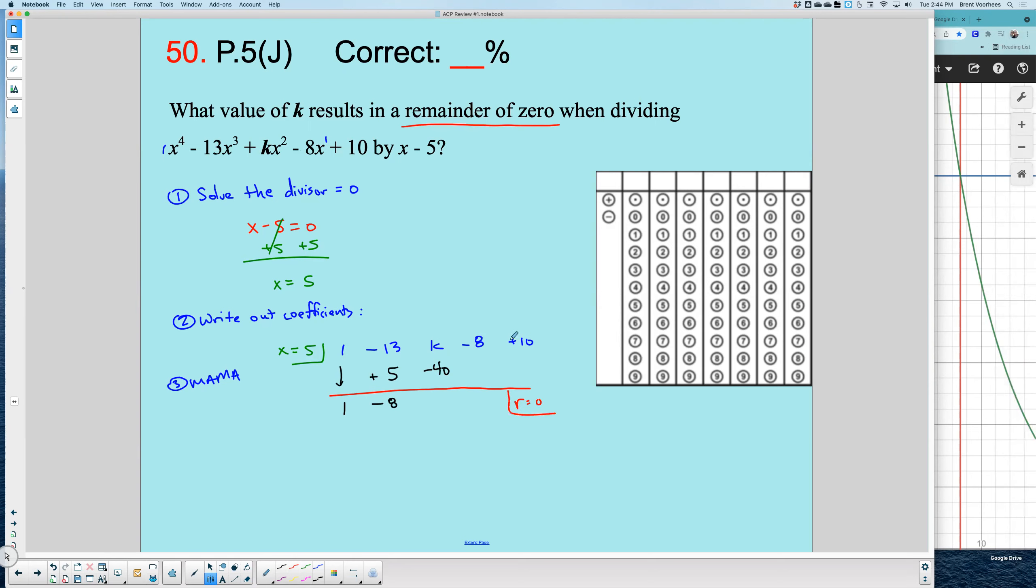Well, for my remainder to equal zero, that means 10, positive 10, plus or minus some number gives me zero. The answer is it has to be -10. 10 minus 10 gives me zero.